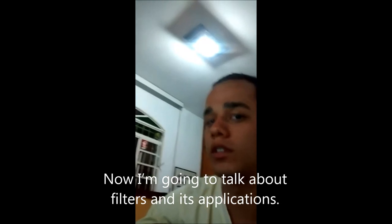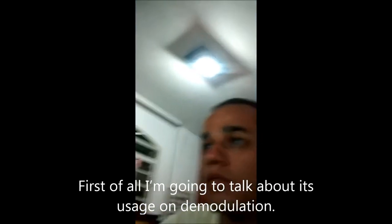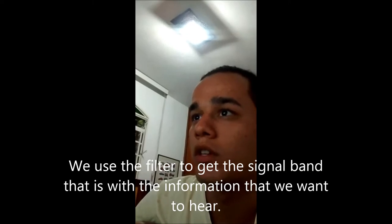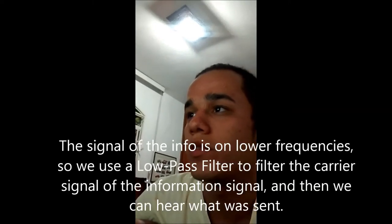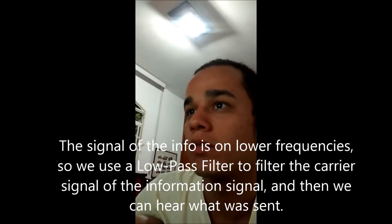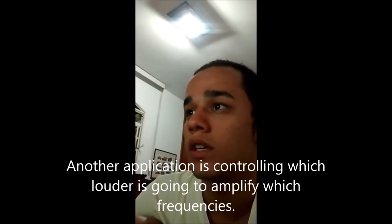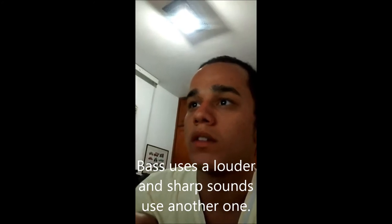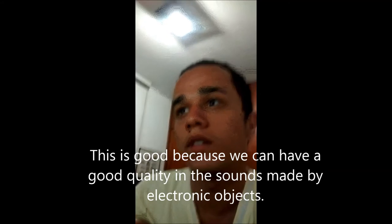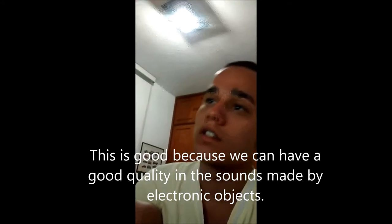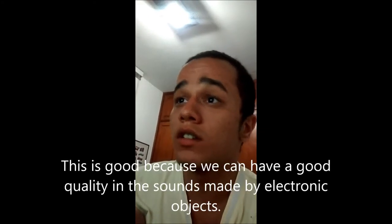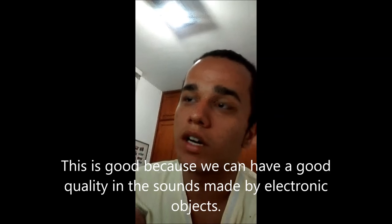First of all, I am going to talk about its usage on the modulation. We use the filter to get the signal band, that is, with the information that we want to hear. The signal with the info is in lower frequencies. So, we use a low-pass filter to filter the carrier signal from the information signal, and then we can hear what was sent. Another application is controlling which loudspeaker is going to validate which frequencies. The bass uses a loudspeaker and sharp sound uses another one. This is why we have three or four loudspeakers in a big amplifier. This is good, because we can have good quality in the sounds made by electronic objects.